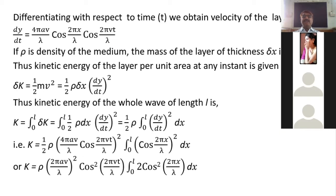If ρ is the density of the medium (mass per unit length), a small element of thickness δx has mass ρ·δx. The kinetic energy of this element is δK = ½ · ρ·dx · (dy/dt)². The total kinetic energy K for the full length l is obtained by integrating δK from 0 to l.